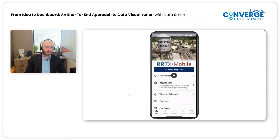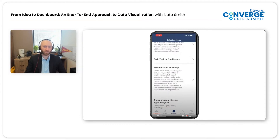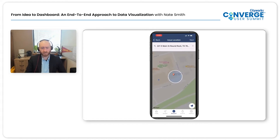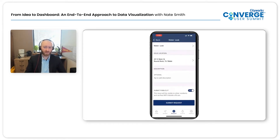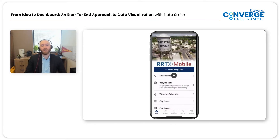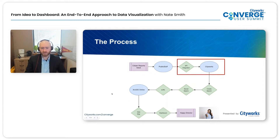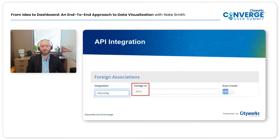I don't want to spend too much time on the citizen reporting and public stuff side, as this is a CityWorks user summit, but I wanted to give a brief overview for context. What you're looking at here is our mobile app called RRTX Mobile. From here, citizens can submit a request — they scroll down and select the type of issue, such as a water leak, select their location, add a photo, add a description, and hit submit request. Those go into public stuff.